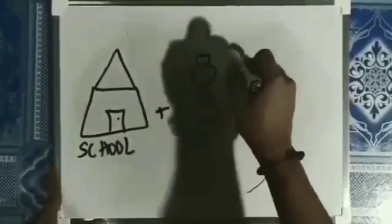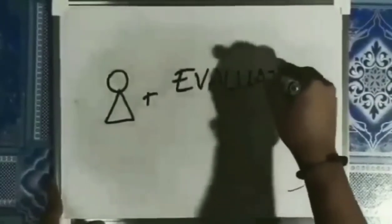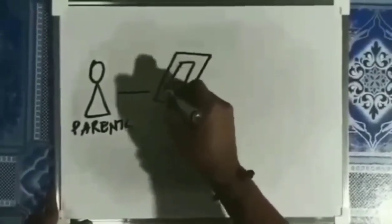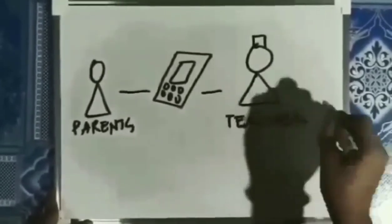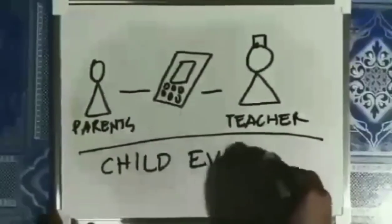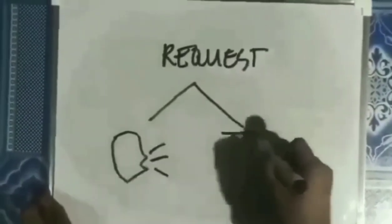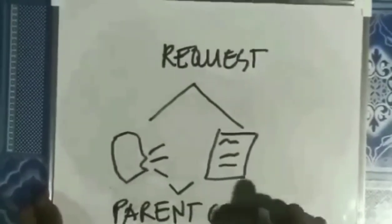Referral or Request for Evaluation. A school professional may ask that the child be evaluated to see if he or she has a disability. Parents may also contact the child's teacher or other school professional to ask that their child be evaluated. The request may be verbal or in writing. Written parental consent is needed before the child may be evaluated.